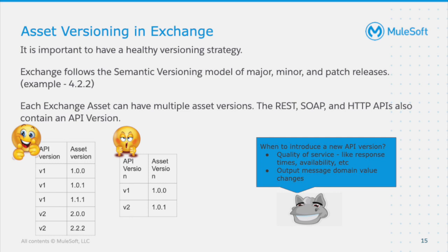Exchange follows the semantic versioning model of major, minor, and patch — exactly like MuleSoft's product version 4.2.2, for example. Each asset can have multiple asset versions, and each API version can have multiple versions of an asset. For example, if you have an API created at version v1 and published as 1.0.0, and you then make a small change like adding a custom parameter to the marketing service, that change will not change the API version v1.